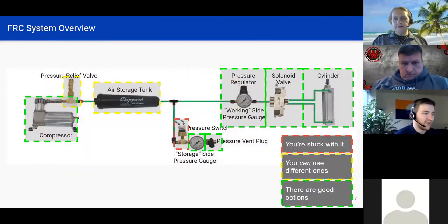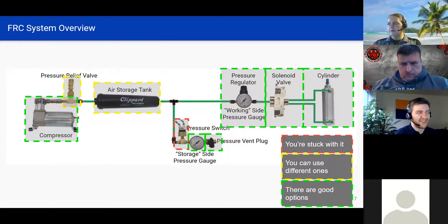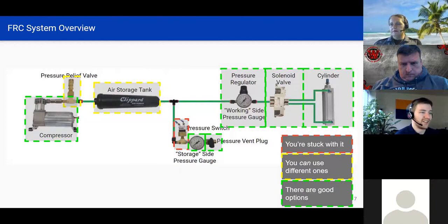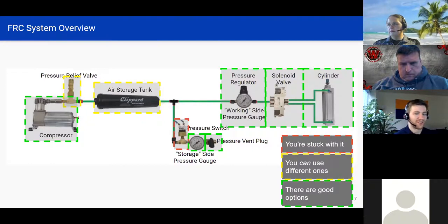All these components — there are a lot of different things that the rules specify versus what we want to do. The stuff in red, which is just the pressure switch, you are required to use the specific one. The stuff in yellow — there are a couple options, but not really a reason to diverge too much. The stuff in green is where it really opens up and gets fun. One key rule across the board is that you cannot customize or modify pneumatic components — you couldn't drill a hole in a cylinder and tap a new fitting in place.